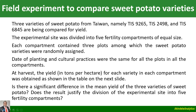The experimental site was divided into five fertility compartments of equal size. Each compartment contained three plots, among which the sweet potato varieties were randomly assigned. Date of planting and cultural practices were the same for all the plots in all the compartments.